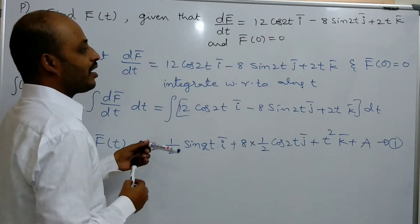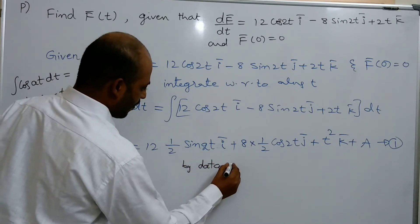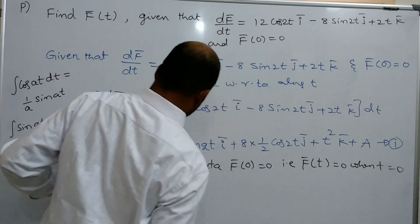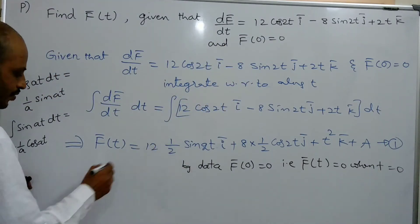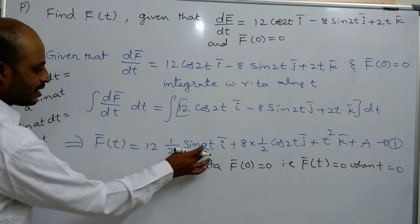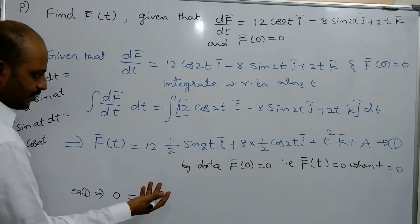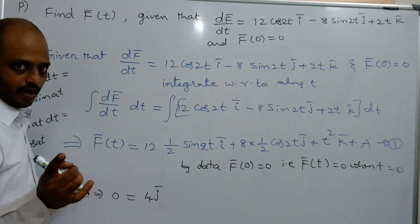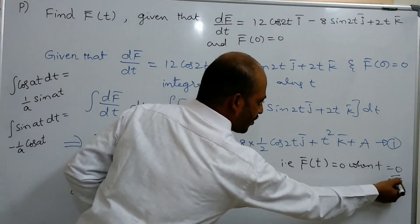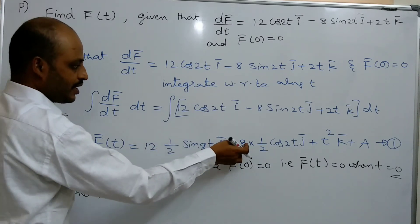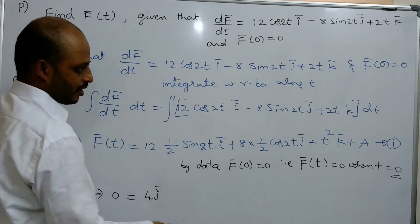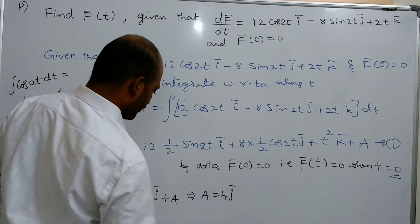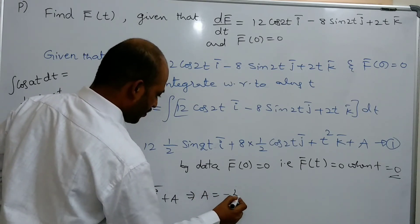By given data, f̄(0) equals 0. Putting t equals 0 in equation 1: sin(0) equals 0 so the first term is 0; cos(0) equals 1 so the j̄ term gives 4j̄; and t² gives 0. So 0 equals 4j̄ plus A, therefore A equals minus 4j̄.